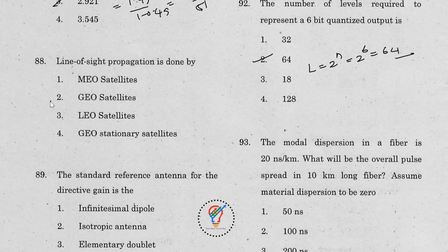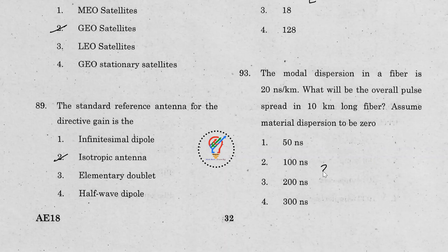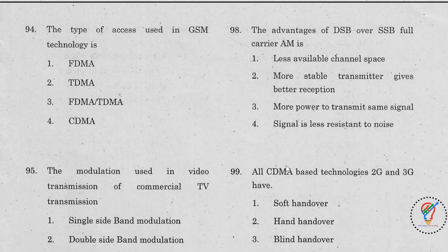Line-of-sight propagation is done by GEO satellites — option 2. The standard reference antenna for directive gain is the isotropic antenna. Question 93 on modal dispersion: if modal dispersion is 20 nanoseconds per kilometer over 10 kilometers, the overall pulse spread is 200 nanoseconds — answer is option 3.